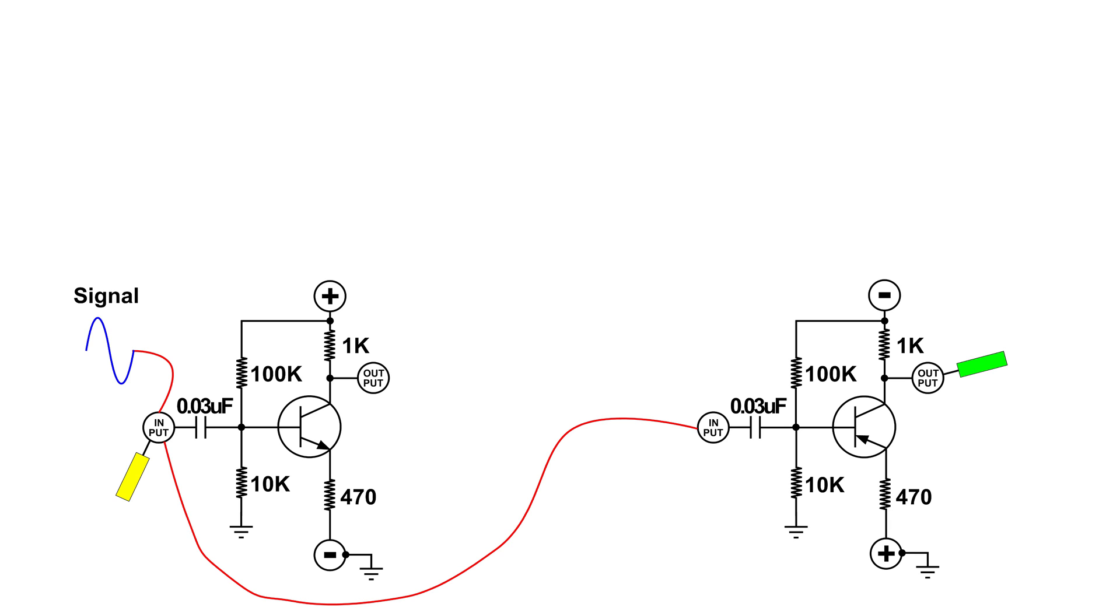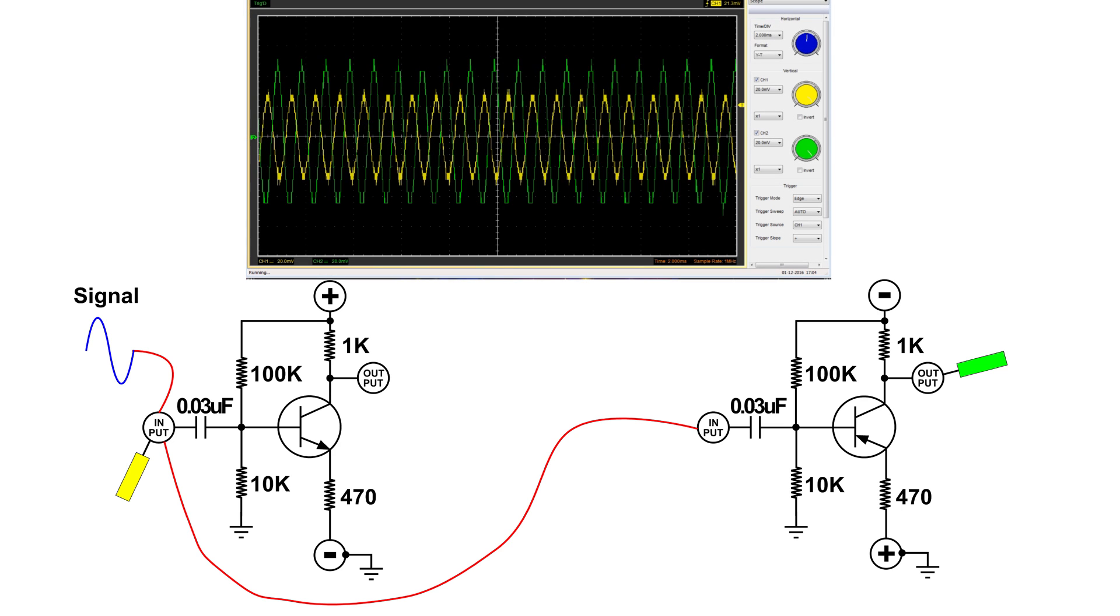Now let's look at the PNP single stage amplifier. The yellow is on the input signal and the green probe is on the collector output of the PNP transistor. Notice that it looks the same. We've got about the same amplification and the signal here is also 180 degrees out of phase.